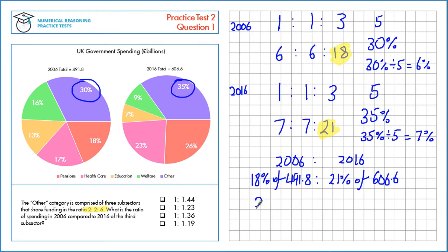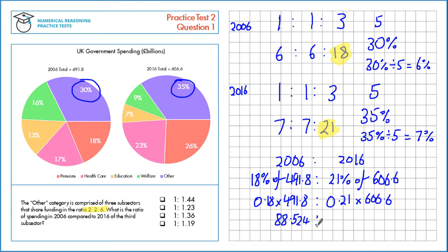As a multiplier, 18% is 0.18, so we multiply 0.18 by 491.8 million. Similarly for 2016, 0.21 times 606.6 million. That gives us on the left hand side 88.524 and 127.386. These are both in millions, but similarly to how we divided through by 2 for the whole ratio, we can divide through by a million.